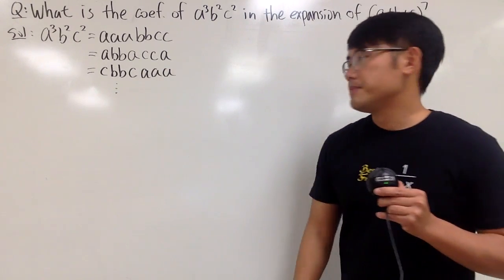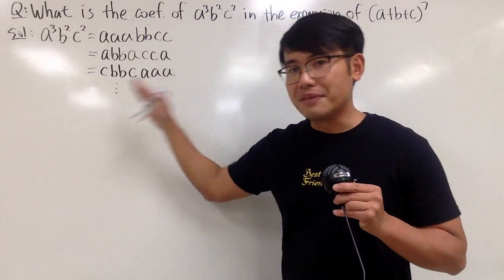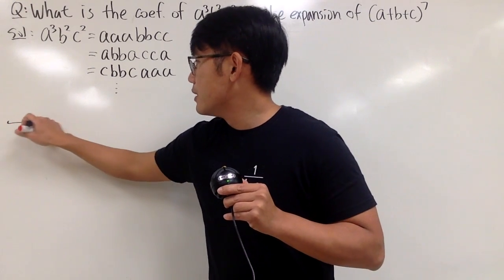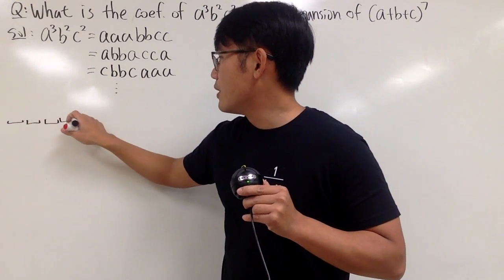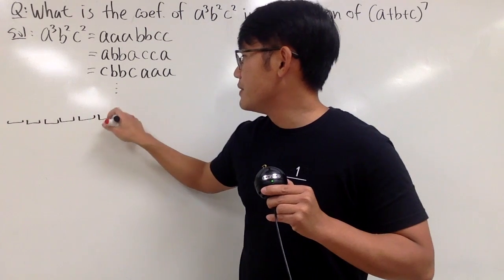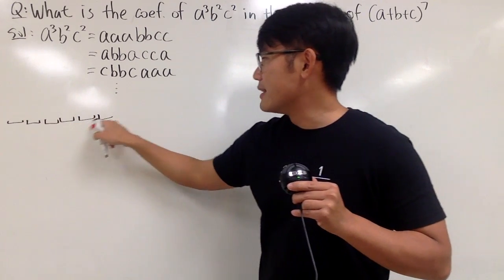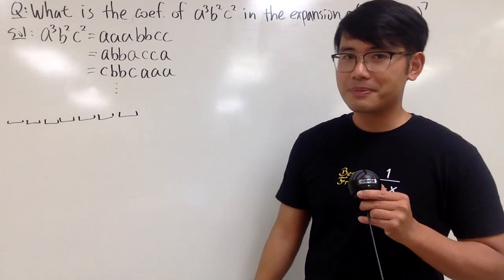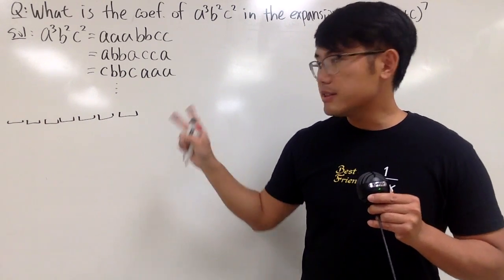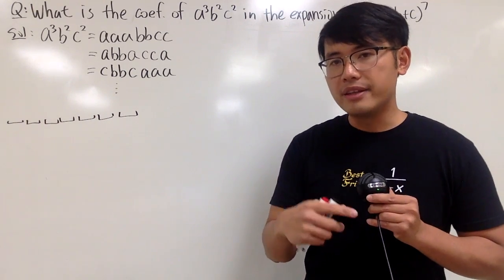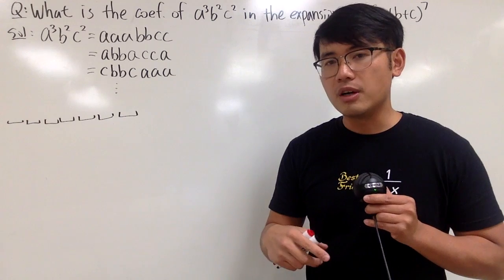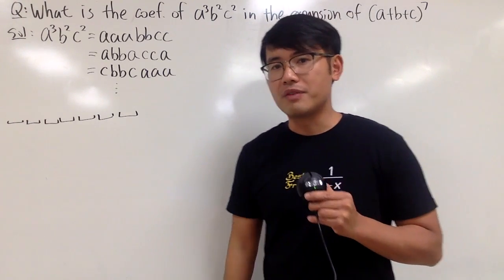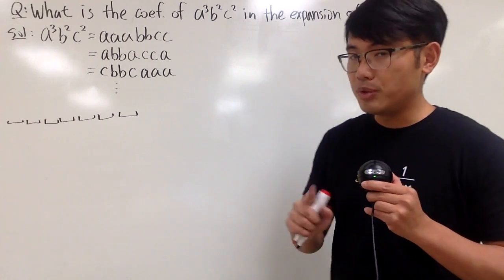We will have to have seven things. I will draw seven of these little slots — one, two, three, four, five, six, seven. You can look at this two ways. The first one is just like what I did in the previous video: the selection — seven choose whatever.